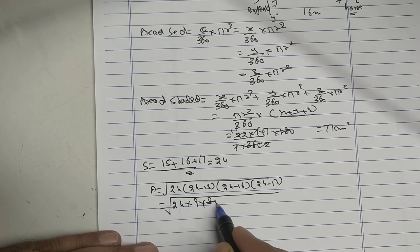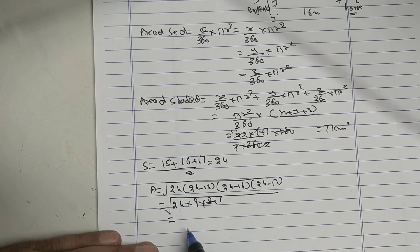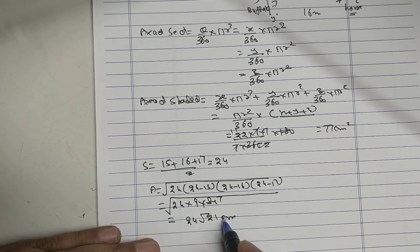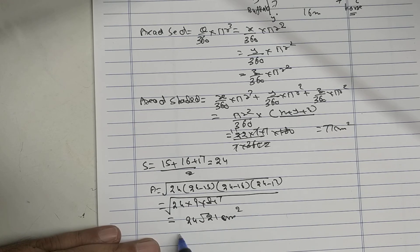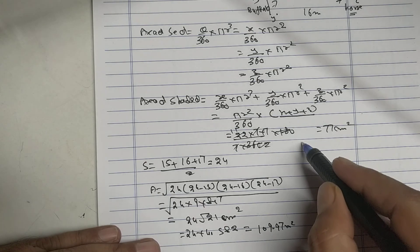I get answer as 24√21 meter square. √21 is 4.582, so my answer is 109.97 meter square.